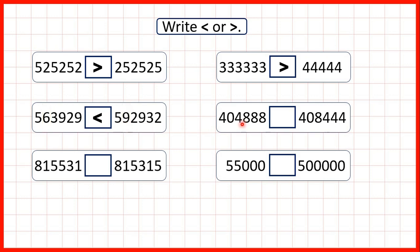Now 404,888 and 408,444. We're comparing two six-digit numbers. They both have the same number of hundred thousands and the same number of ten thousands, so we need to go across to our thousands. Here we have a four but here we have an eight, so we know that our second number must be larger. It doesn't matter what comes after the thousands digits because a thousand is larger than anything that comes after it.